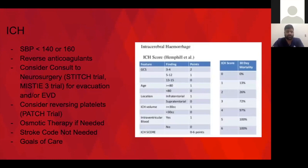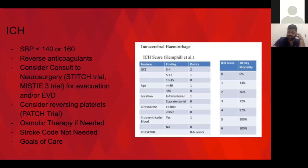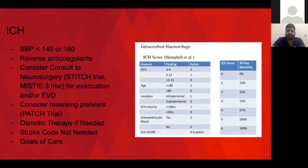A brief note about intracerebral hemorrhage: there hasn't been a study that shows anything we do for ICH definitively benefits patients. Surgery — the STITCH trial was negative, the MISTIE-3 trial was negative. Reversing platelets — the PATCH trial was negative. We still drop blood pressure to less than 140 or 160, which is patient dependent, and it's really just supportive care otherwise. Stroke codes are really for patients that need TPA or thrombectomy — they don't have to be called for ICH. The ICH score measures 30-day mortality based on GCS, age, location, ICH volume, and whether there's blood in the ventricles.